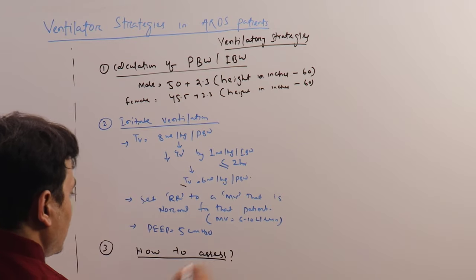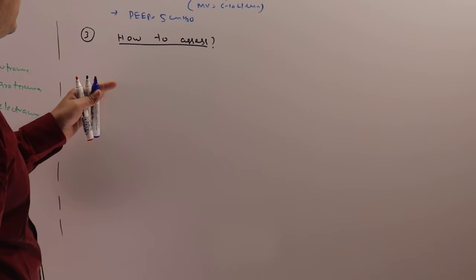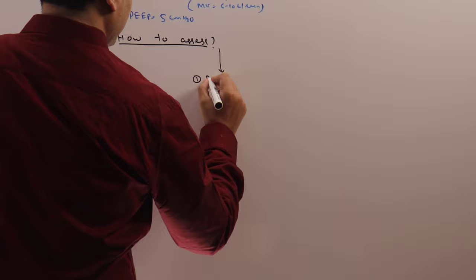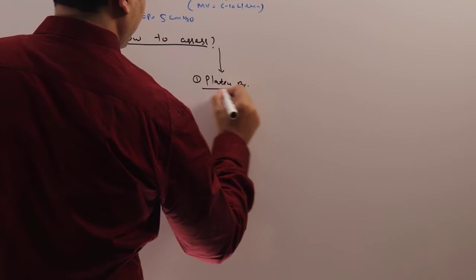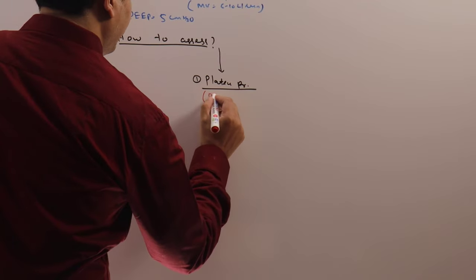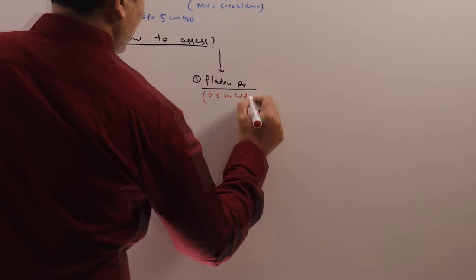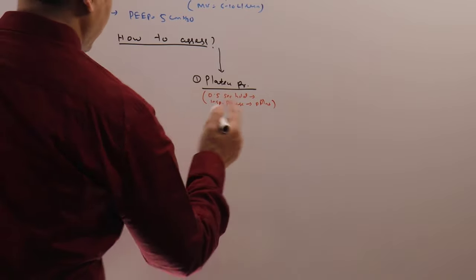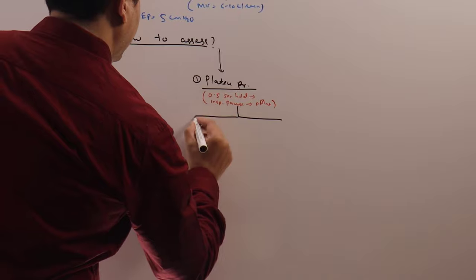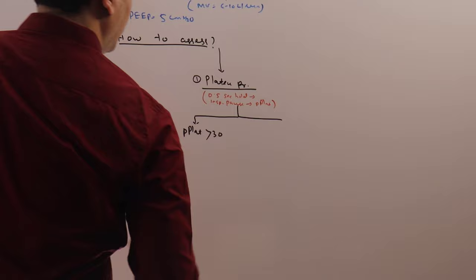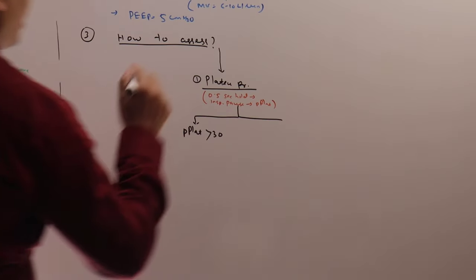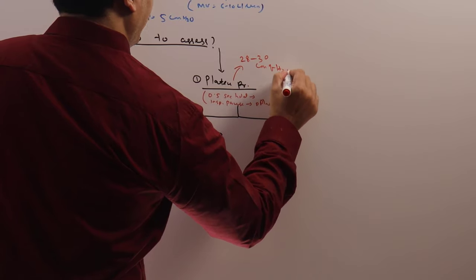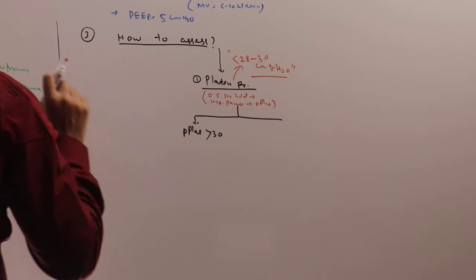Now, how to assess this. Whenever there is a question of assessment, we define our target points. We have basically three target points. Number one, and the most important, is the plateau pressure target. Plateau pressure is calculated by applying a 0.5-second inspiratory pause, and then calculating the P-plat. Our plateau pressure target is 28 to 30 cmH2O.